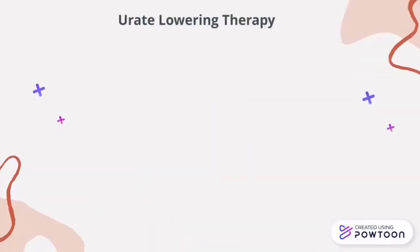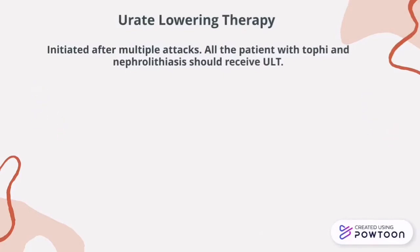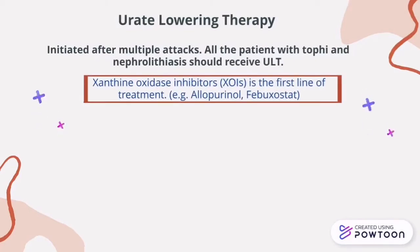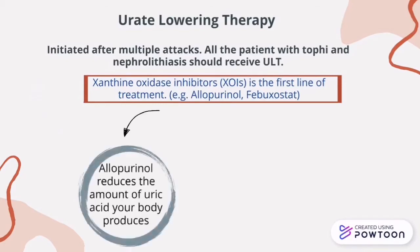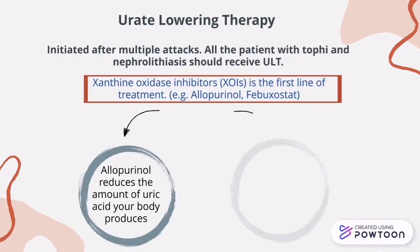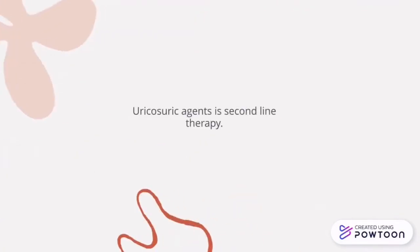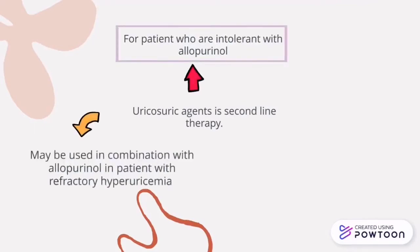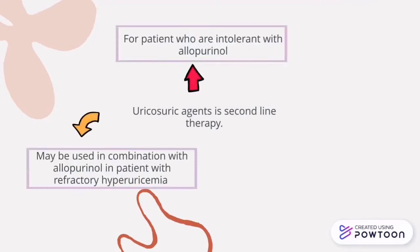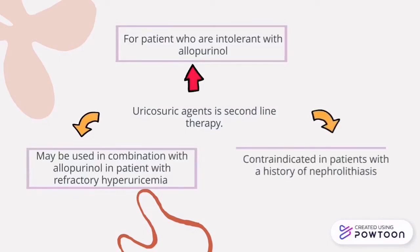Uric acid-lowering therapy is indicated after multiple attacks. Xanthine oxidase inhibitors are the pillar of treatment, for example allopurinol and febuxostat. Allopurinol reduces the amount of uric acid the body produces, and febuxostat lowers uric acid levels. It is also an option for patients who cannot take allopurinol. Probenecid is second-line therapy for patients who are intolerant to allopurinol, and may be used in combination with allopurinol in patients with refractory hyperuricemia. However, it is contraindicated in patients with a history of nephrolithiasis.